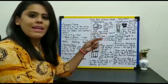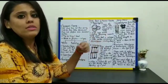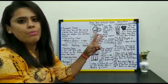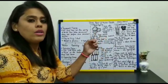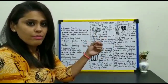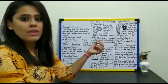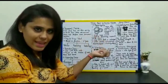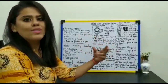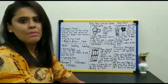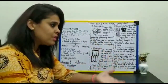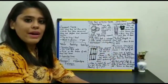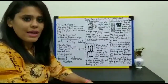In meristematic tissue, we understood that depending upon its location, the meristematic tissue is further divided into two important types. Meristematic tissues are those which are rapidly dividing, which are made up of rapidly dividing cells and which continuously keep on adding cells to the plant body. Depending upon its location, we classify them into two types.